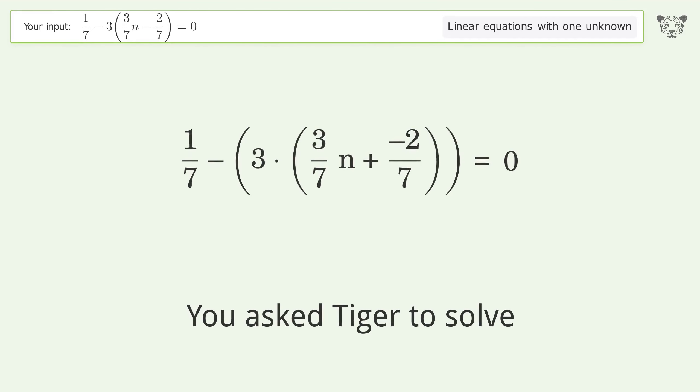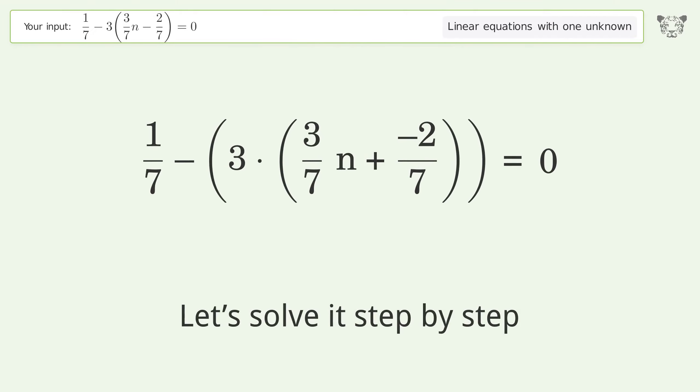You ask Tiger to solve this. This deals with linear equations with one unknown. The final result is n equals 7 over 9. Let's solve it step by step. Simplify the expression.